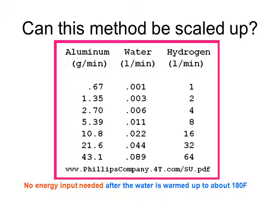Can this method be scaled up? Can it be more than just a few bubbles in a cup? The answer is yes. There's another file online, the ISSU.pdf document, which gives all the fundamental chemistry and scale-up calculations. This shows what happens if you burn the aluminum at a given rate. If you burn it at about 0.67 grams per minute, which is less than a teaspoon a minute, you can produce hydrogen at the rate of about one liter per minute. If you consumed aluminum at 43 grams per minute, you could produce hydrogen at about 64 liters a minute.